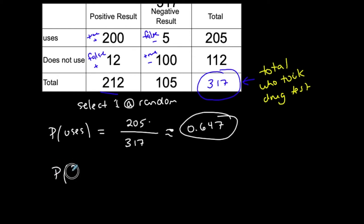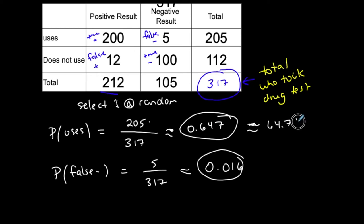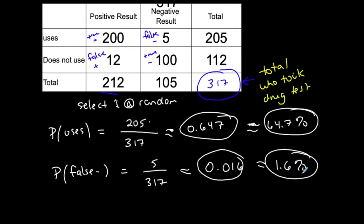Let's find the probability of randomly selecting one person who had a false negative test result. There were 5 false negative test results out of 317, so P(false negative) = 5/317 ≈ 0.016. Probability can also be represented in percentage form — move the decimal two places right. So there's a 64.7% chance of randomly selecting someone who uses, and an approximate 1.6% chance of selecting someone with a false negative result.